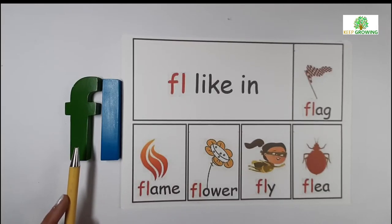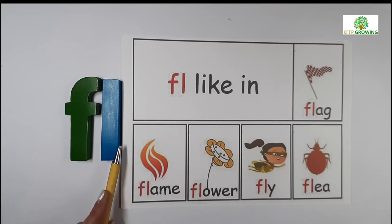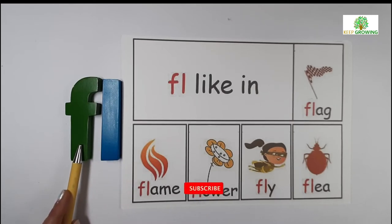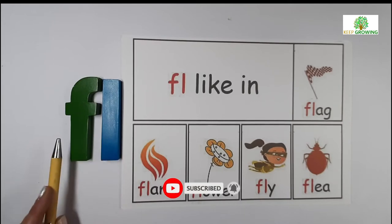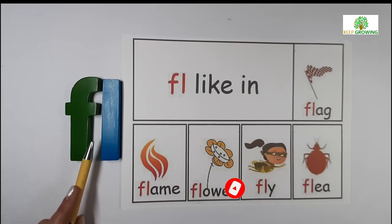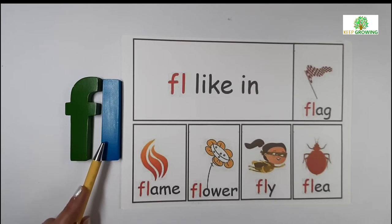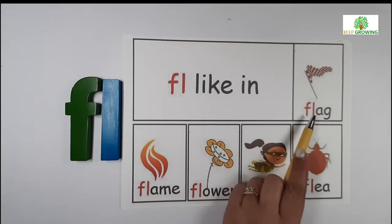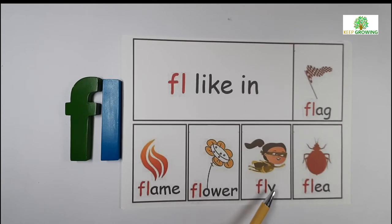Next blend is the blend of letter F and L. F sounds F and L sounds L. It gives a sound FL. For example: flag, flame, flower, fly, flea.